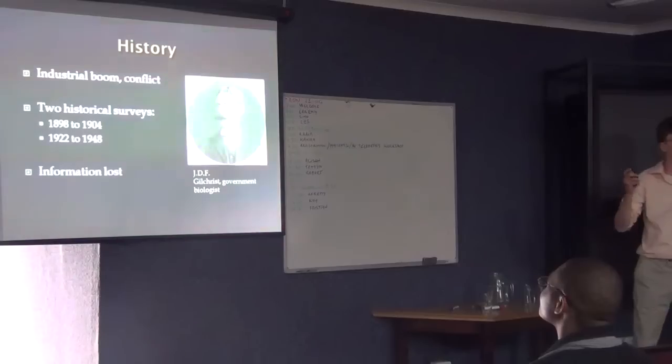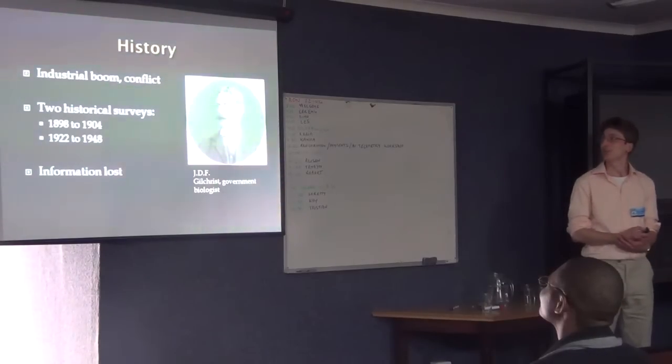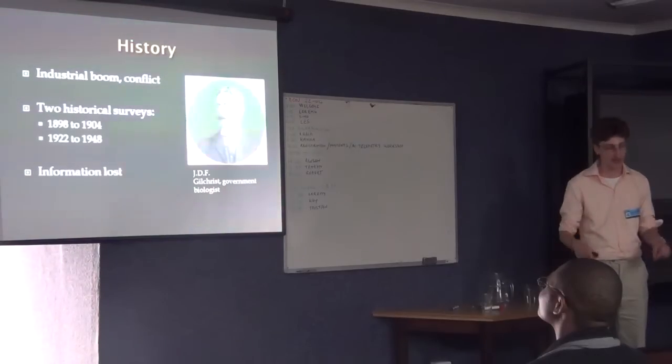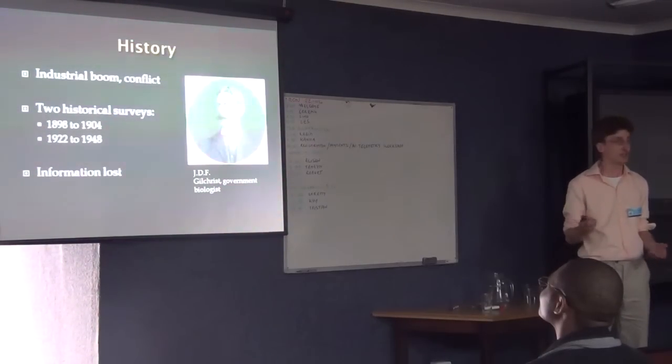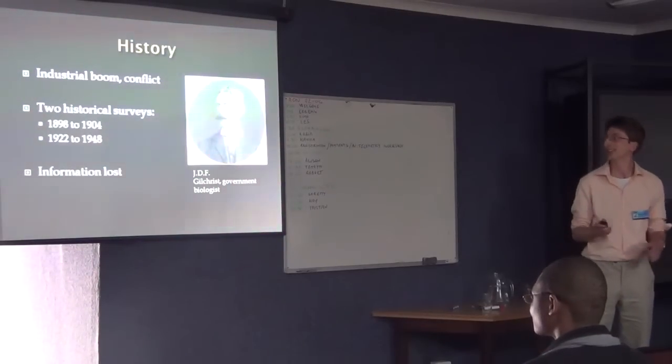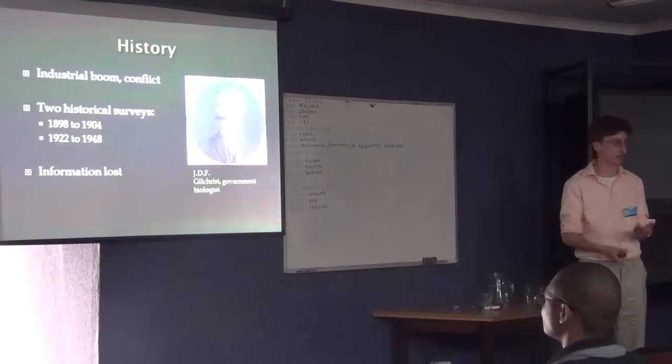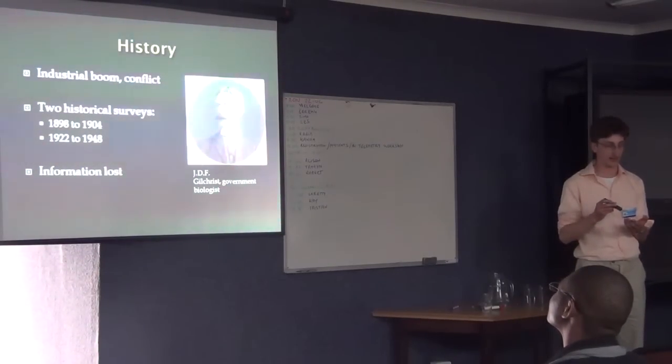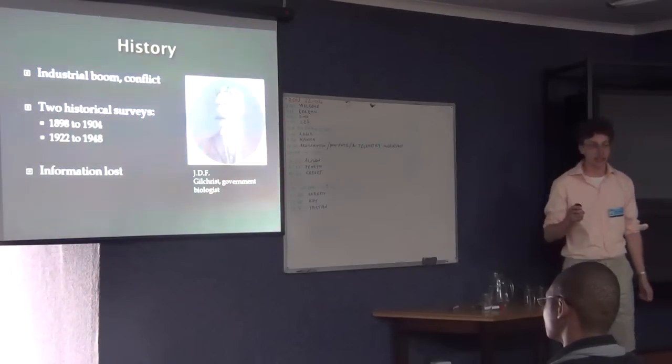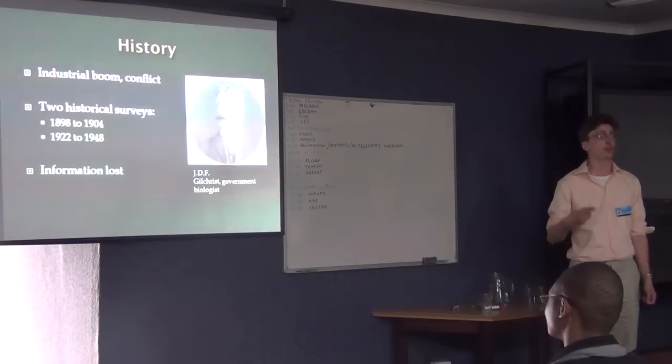History: Jeremy already mentioned this man, J.D.F. Gilchrist. At the time, South Africa was going through an industrial boom. Diamonds and gold had been discovered, and they were starting to mine those in high quantities. But there was also a series of armed conflicts. The upshot was a large influx of people into the country, workers but also soldiers. The government realized that agriculture and agricultural production would not cover the rising demand.